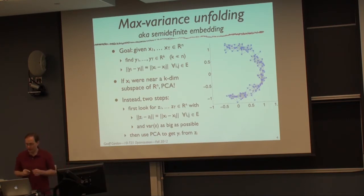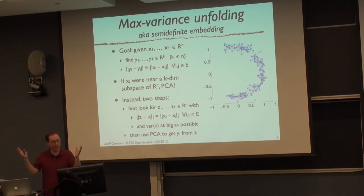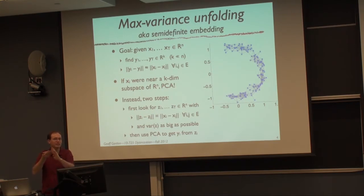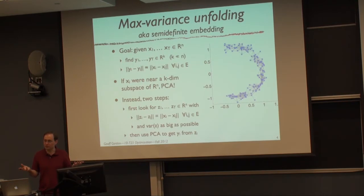A manifold is essentially a curved surface in high dimensions — a subset of your high-dimensional space that is locally smooth, doesn't have sharp kinks, and doesn't self-intersect. We imagine our data lies on some high-dimensional curved manifold, and we want to flatten that manifold out to obtain plain Euclidean coordinates for our data, though this isn't possible for every manifold.